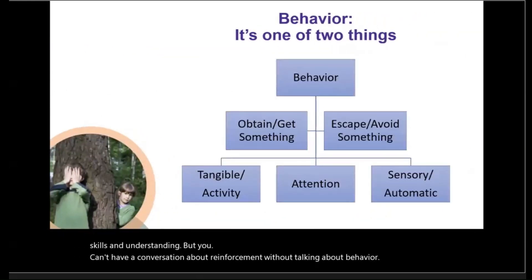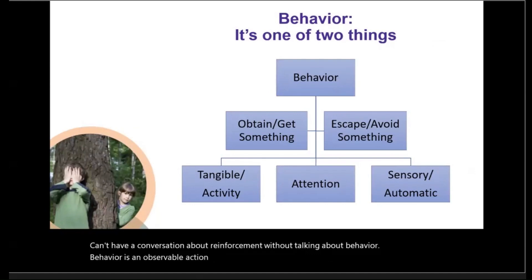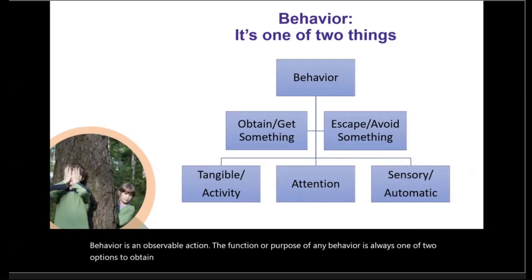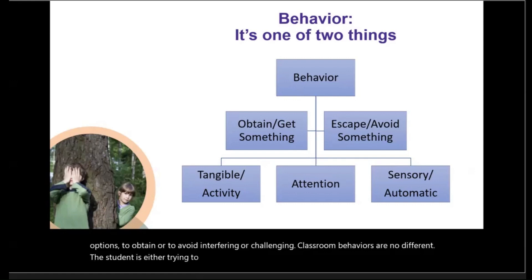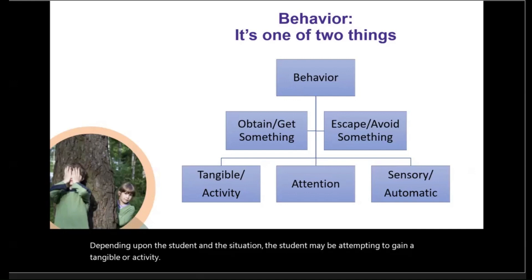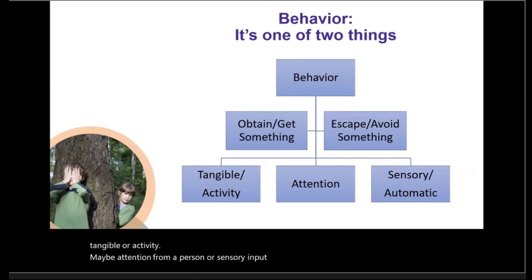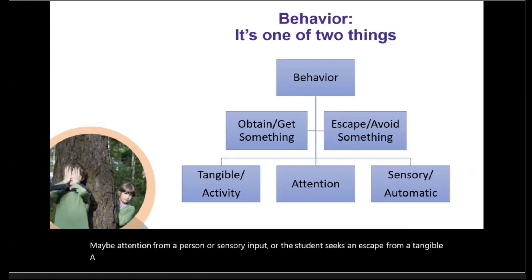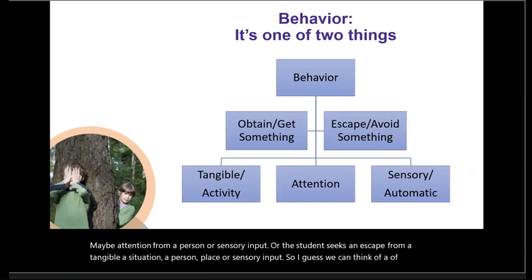Behavior is an observable action. The function or purpose of any behavior is always one of two options: to obtain or to avoid. Interfering or challenging classroom behaviors are no different. The student is either trying to obtain — get something — or escape and avoid something. Depending upon the student and the situation, the student may be attempting to gain a tangible or activity, maybe attention from a person or sensory input, or the student seeks an escape from a tangible, a situation, a person, place, or sensory input. So we can think of behavior as a sort of hide and seek.